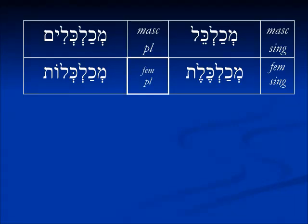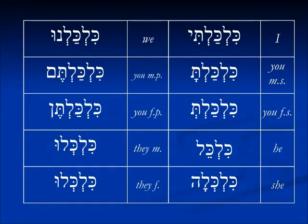For the square root form: mechalkel, mechalkelet, mechalkalim, mechalklot. The past tense for dibber would be dibarti, dibarta, dibart — and this looks very similar to kilkalti, kilkalta, kilkalt, kilkel — similar to dibber.